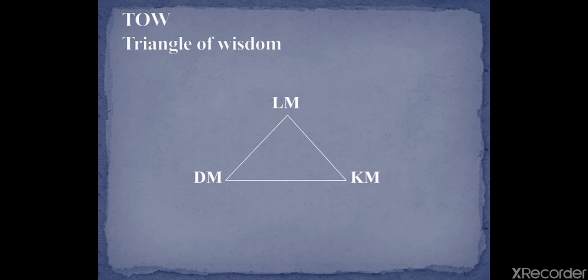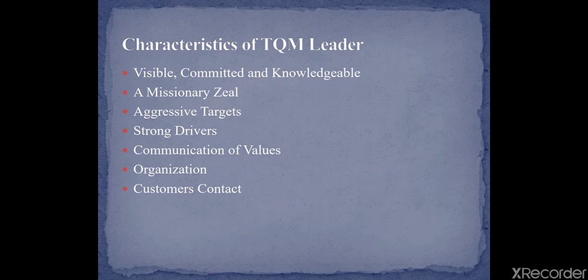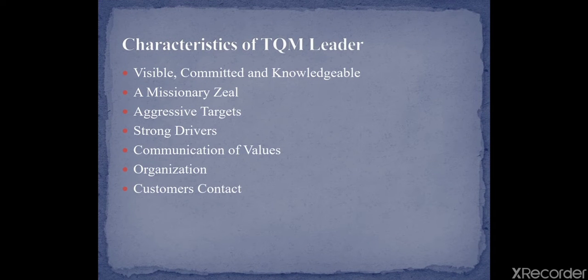On that basis, the triangle of wisdom is applied — this is the knowledge management principle. This is the simple principle of TQM. The characteristics of a TQM leader are: visible and committed, knowledgeable, missionary zeal, aggressive targets, strong driver, communication of values, and customer focus. These characteristics are most important whenever we apply TQM in any organization.